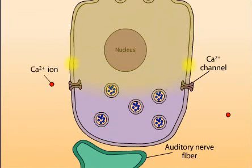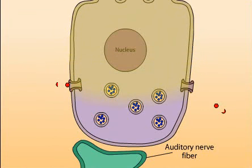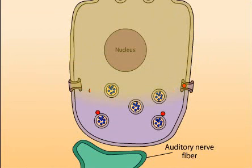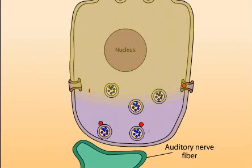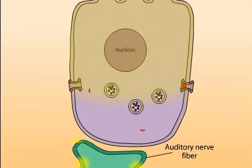The depolarization in turn leads to an influx of calcium ions through voltage-gated calcium channels at the base of the hair cell. The calcium triggers the release of neurotransmitter from synaptic vesicles, also located at the base of the hair cell. This stimulates the afferent nerve fibers which form part of the auditory nerve, and the signal is thus passed along to the brain.